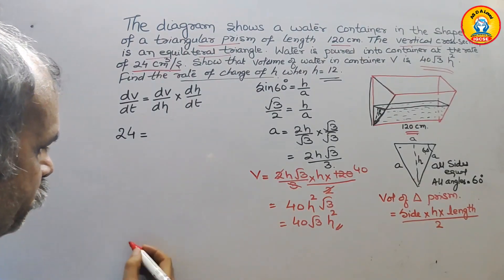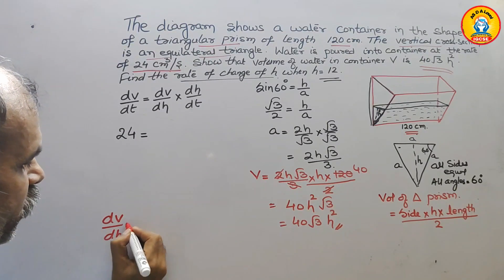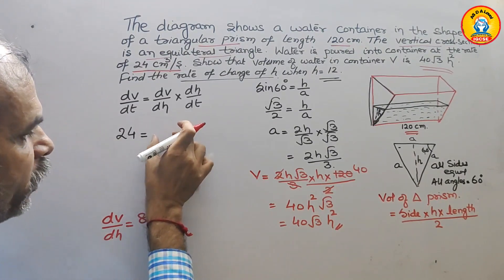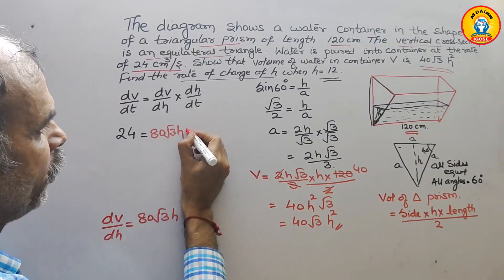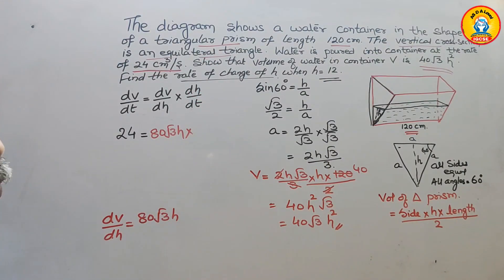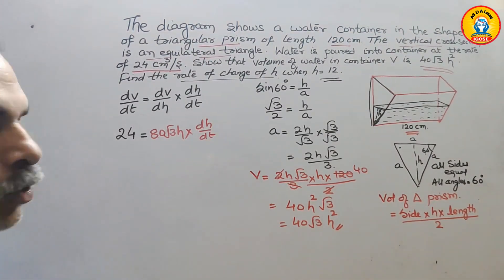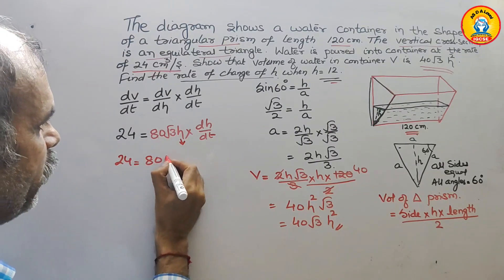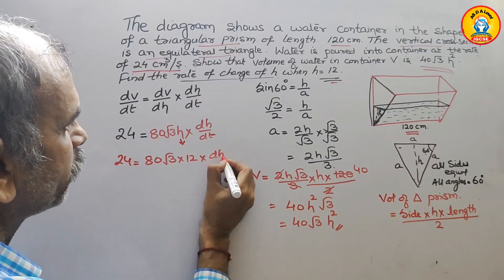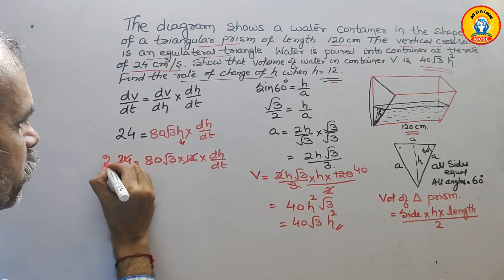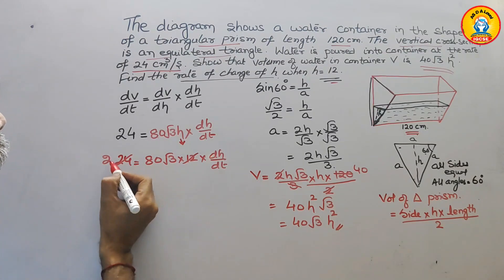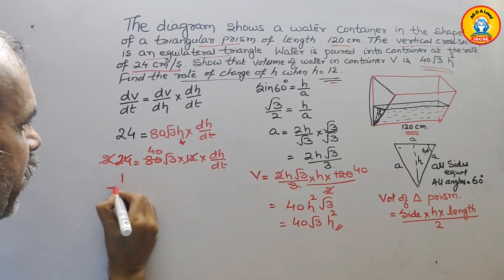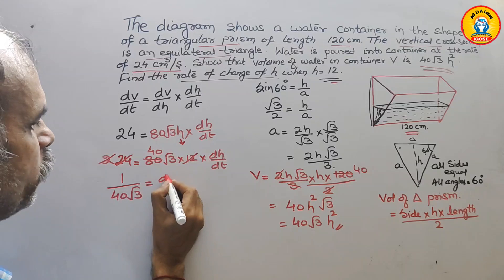Differentiating V = 40√3 h² gives dV/dh = 80√3 h. Substituting into the chain rule equation: 24 = 80√3 h × (dh/dt). Now substitute h = 12: 24 = 80√3 × 12 × (dh/dt). Simplifying: 24 divided by 12 goes 2 times, and 2 into 80 gives 40. So dh/dt = 1 / (40√3).